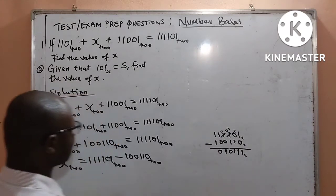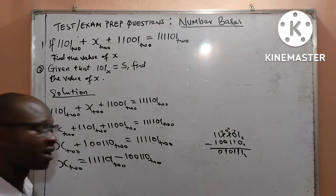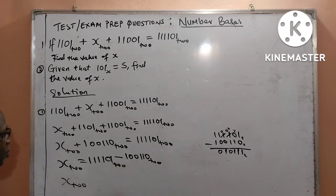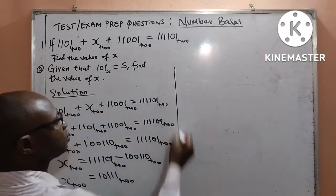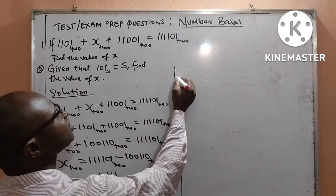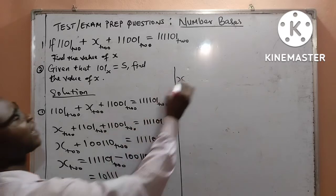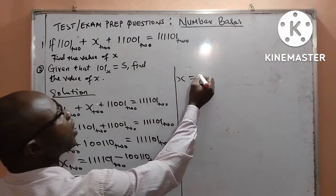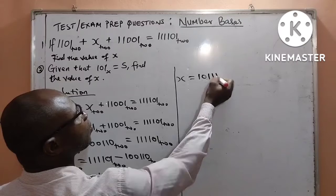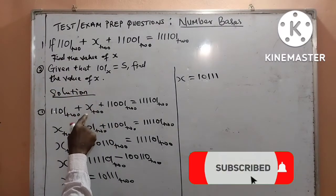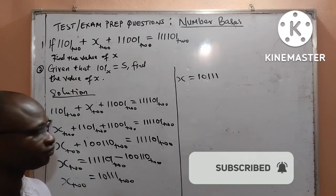In conclusion, we can now say that when we subtract these two binary numbers, what I will now have is that x base 2 will now be equal to 10111 base 2. We can now conclude that the value of x, since x base 2 is equal to 10111 base 2. We can now say that the value of x is 10111. That is the value of x in the question to base 2. Beautiful.